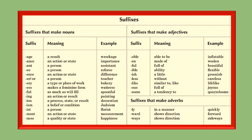Suffixes that make nouns: '-age' denotes a result, as in 'wreckage'. '-ance' denotes an action — 'important' becomes 'importance'. '-ant' denotes a person — 'assist' becomes 'assistant'. '-ee' is added for a person — 'refer' becomes 'referee'. '-er' or '-or' also denotes a person — 'teach' becomes 'teacher', 'conduct' becomes 'conductor', and 'bake' becomes 'baker'.